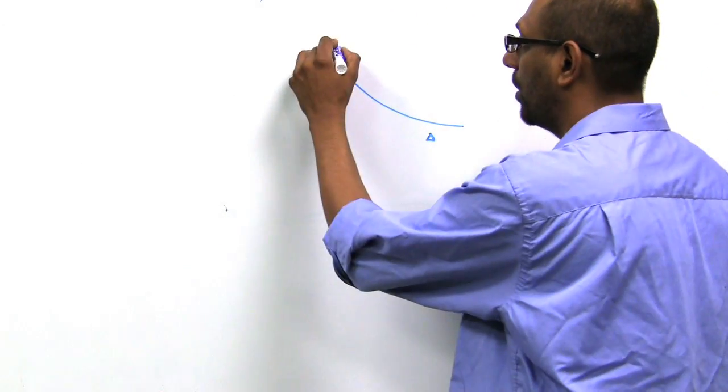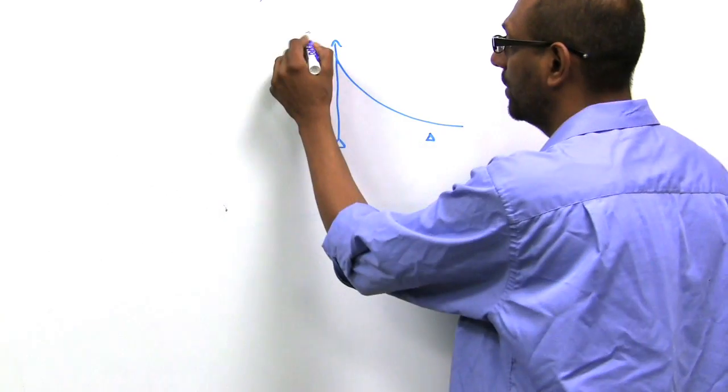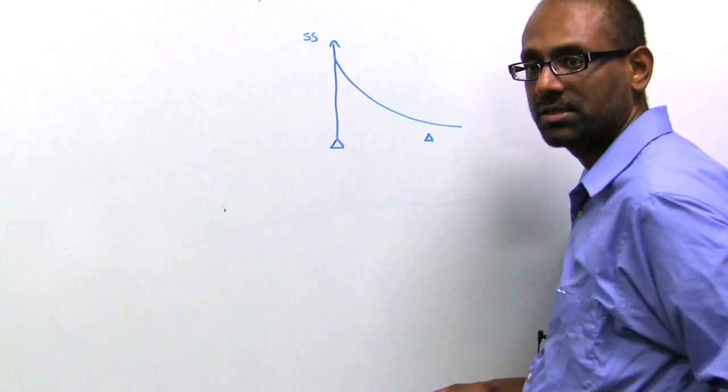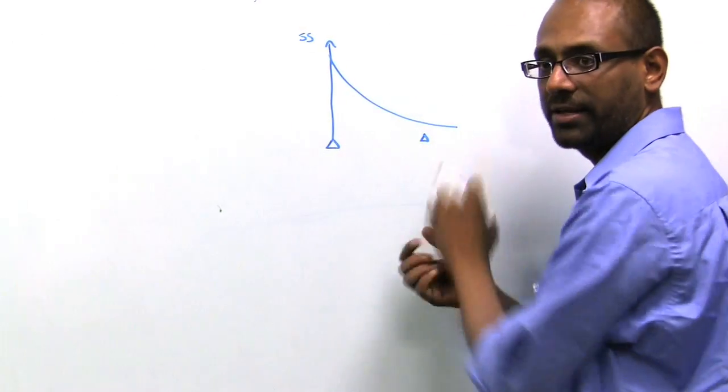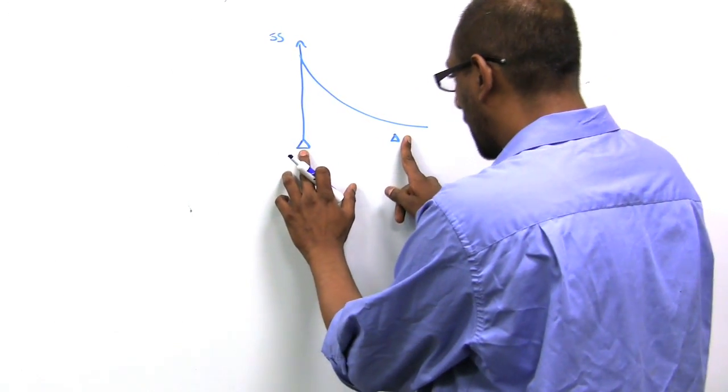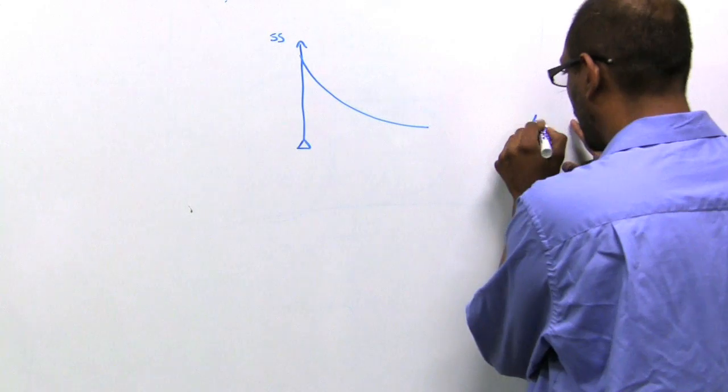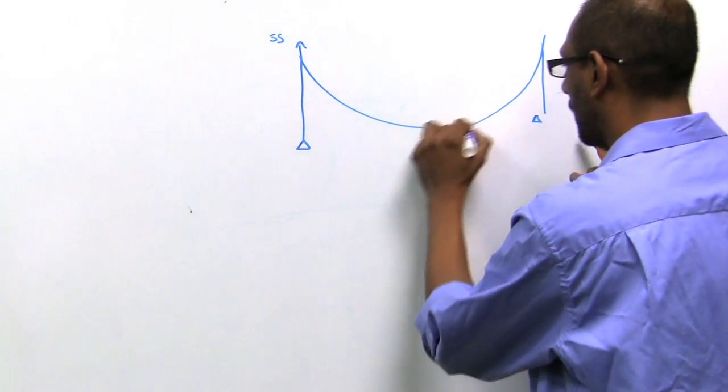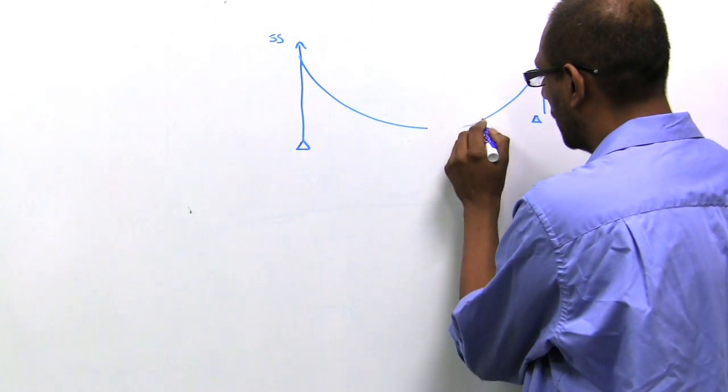So here is a transmitter. On the y-axis is signal strength, and on the x-axis is distance. As you go further away, signal strength decays. So you want to make sure that access points are not placed so far away that there is a coverage hole.